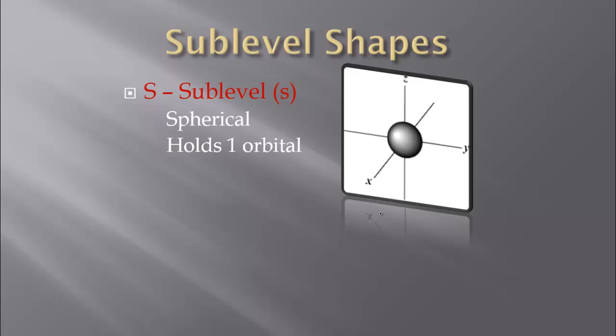Different orbitals can have sublevels. The first one we have is the S sublevel. The S is spherical, and it holds one orbital — that's because it encompasses all the 3D regions.